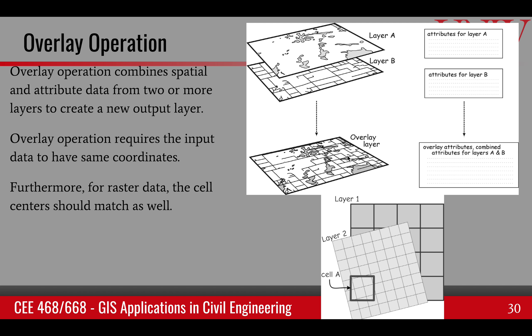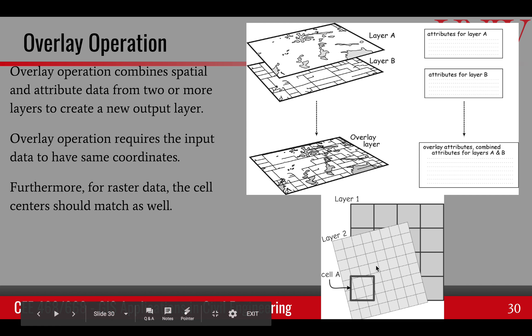One requirement is that the two input layers must have the same spatial reference — the same datum and coordinate system — otherwise the overlay output cannot be determined accurately. Moreover, if we are dealing with raster overlay, the two raster data sets also should have their cells snapped to each other. In other words, they should be matched and their resolution should match as well.